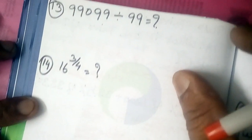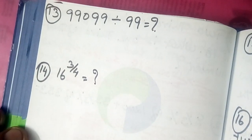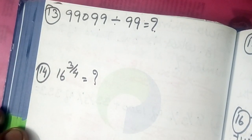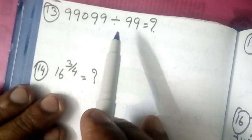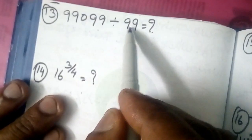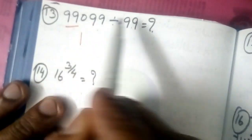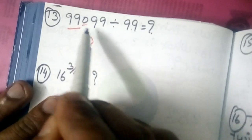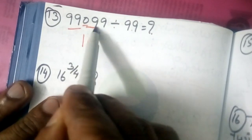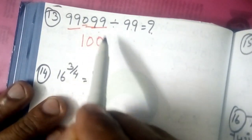Question number 13: 99,099 divided by 99. You can see this is 99,999. Let's write it as 99,099. Then consider 0.2.